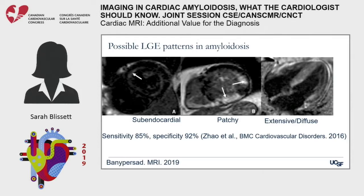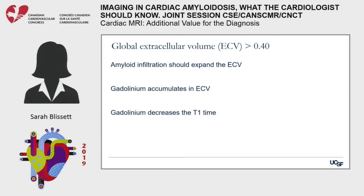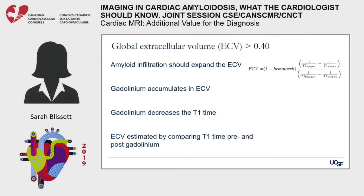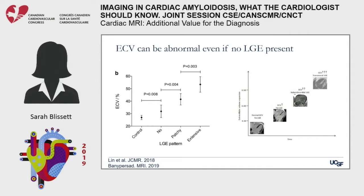LGE can also be seen in the atria. Patients with amyloid can have expanded global extracellular volume, with greater than 0.4 proposed as abnormal and less than 0.25 to 0.29 as normal. Amyloid infiltration expands the ECV; gadolinium accumulates in ECV and shortens T1 time. ECV is estimated by comparing pre- and post-gadolinium T1 times combined with the patient's measured hematocrit within 24 hours of the exam, and can be used to create ECV maps. Importantly, ECV can be abnormal even if there's no LGE present, which has implications for identifying patients earlier in their disease.